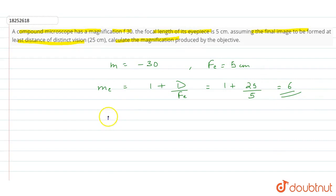Now, let's see what our magnification is going to be. Magnification is equal to M of objective into M of eyepiece. So, total magnification is minus 30. And that is equal to M of objective into M of eyepiece. So, M of objective is minus 30 upon 6. That is equal to minus 5.